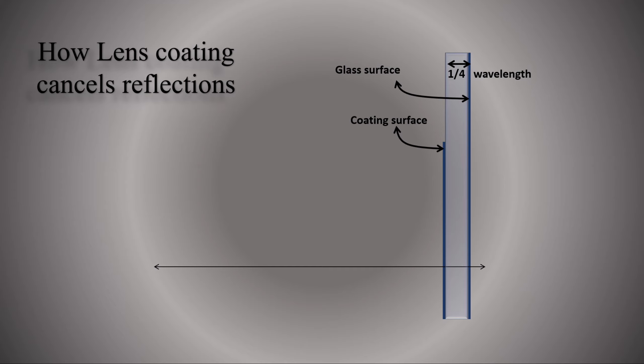Here is the presentation of how lens coating cancels reflections. This is incident ray which hits the coating surface first, then lens coating interferes and if amplitude and path condition both meet, then reflection from coating and reflection from glass cancel out each other.